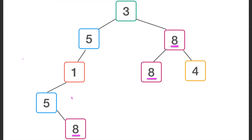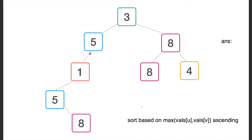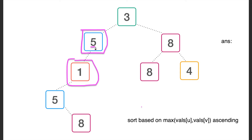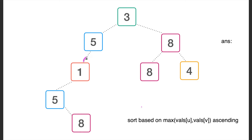We build the tree by adding edges in sorted order. Before adding the first edge, we check the two connected components it will join. The maximum of the two endpoints (values 1 and 5) is 5. We check the frequency of value 5 in each connected component: one component has one node with value 5, the other has zero. Since we can't form a new pair, we don't update our answer — we just add the edge.